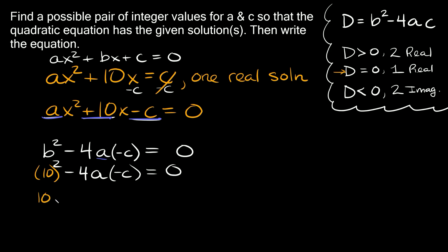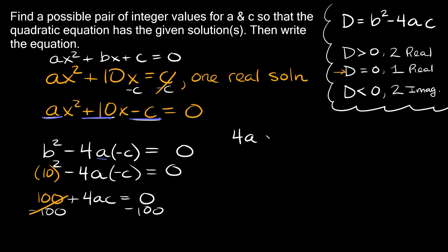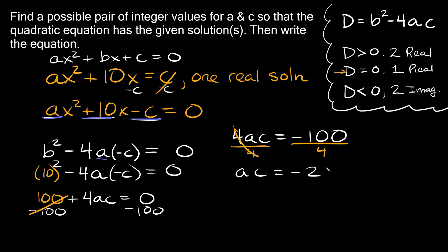So we get 100 minus 4a times negative c, which gives us 100 plus 4ac equals zero. To isolate a and c, subtract 100 from both sides — those cancel out — giving 4ac equals negative 100. Dividing both sides by 4, we get ac equals negative 25.